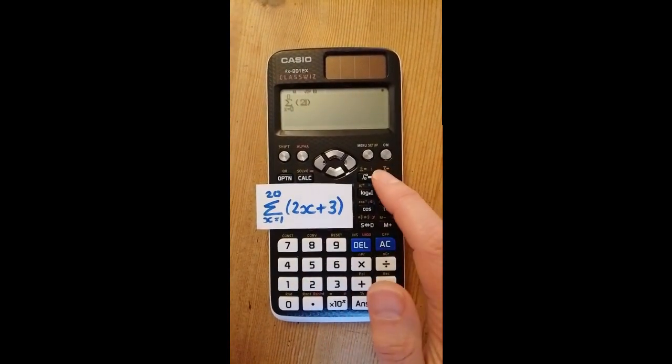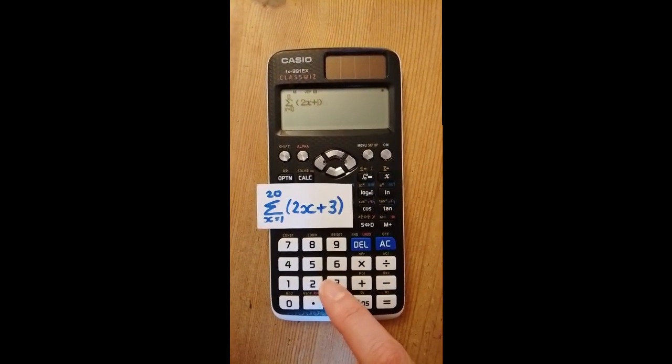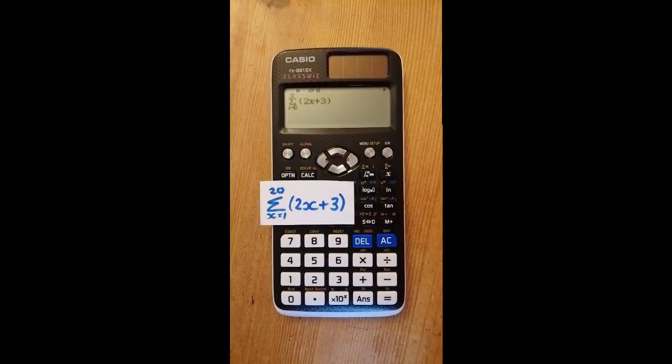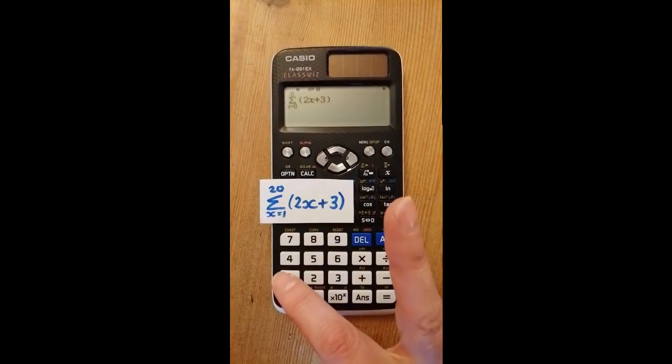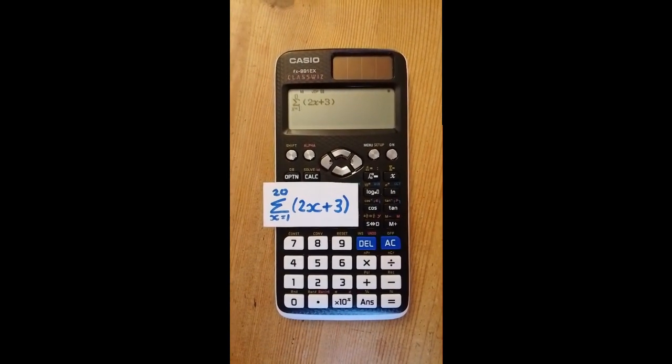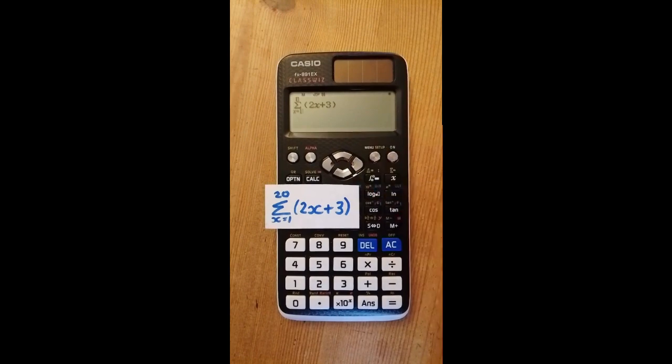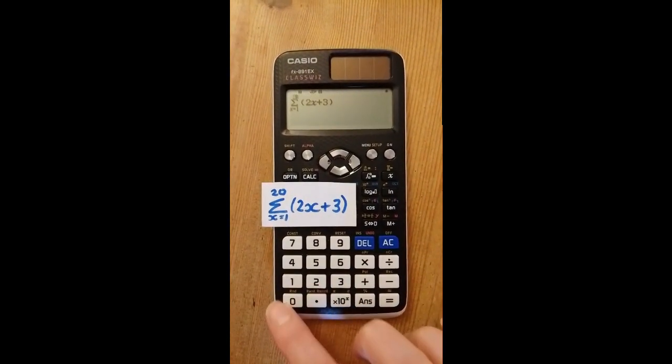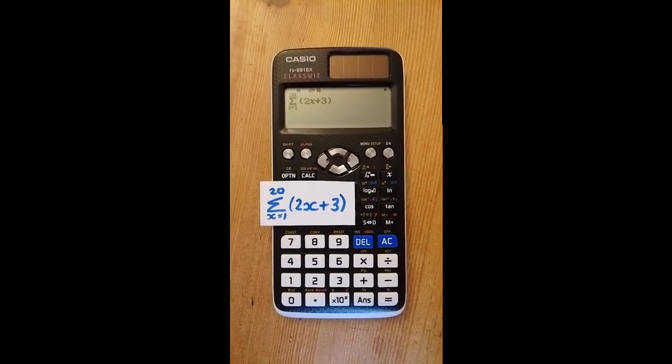Type in 2x plus 3 to input our function. Press the right cursor to get below sigma. Input 1, as this is our starting term. Press the right cursor again to get above sigma. Input 20, because this is the nth term to be summed.